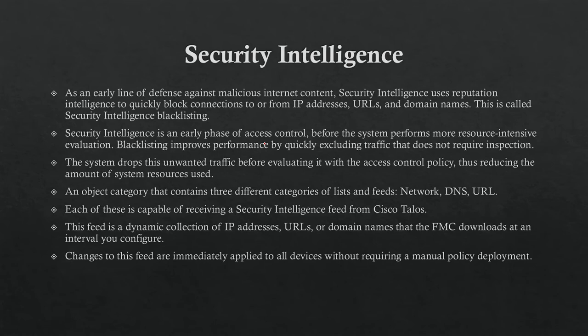It is an early line of defense against malicious internet content. Security Intelligence uses reputation intelligence to quickly block connections to or from IP addresses, URLs, and domain names (DNS). This is called Security Intelligence blacklisting. It creates a concept of a blacklist and whitelist, so any IP, URL, or domain under the blacklist is automatically blocked — without a blocking rule itself — because Security Intelligence works in the access control policy, not in the access control rule.